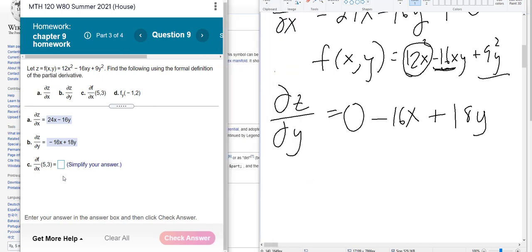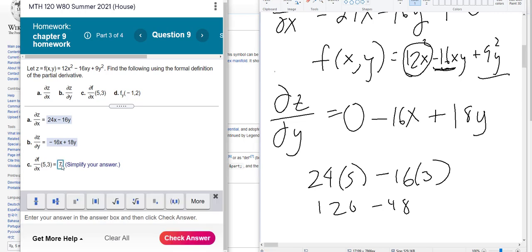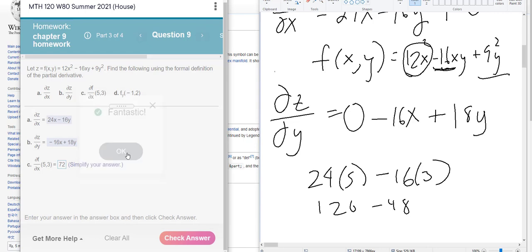Now they actually ask us to evaluate it, the derivative of f, which is also z. So what we have to do is put this into this first one, the derivative of the function with respect to x. So plug in a 5 for x and a 3 for y. Okay? So I would go 24 times 5 minus 16 times 3. So it's 120 minus 48. It is 72. So the substitution part is not hard. It's just making sure that you understand the notation.